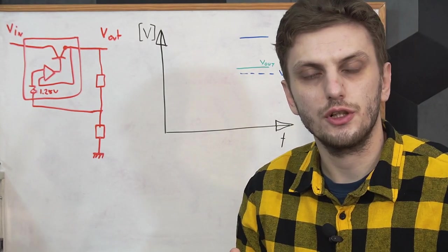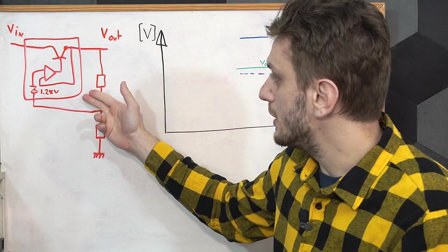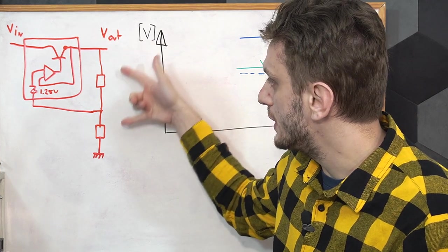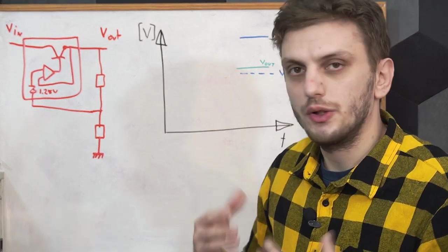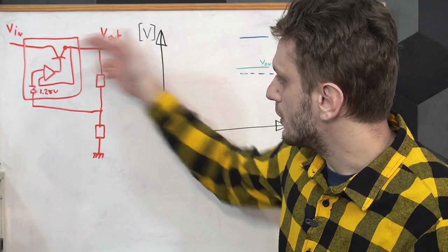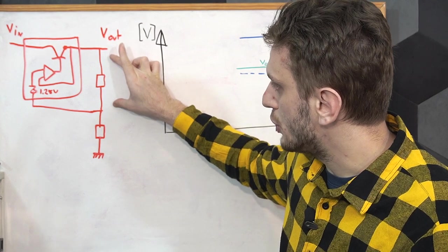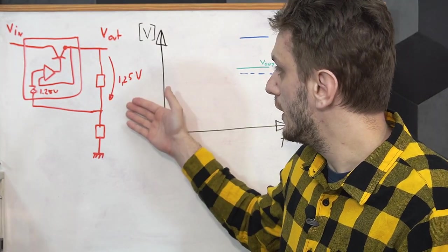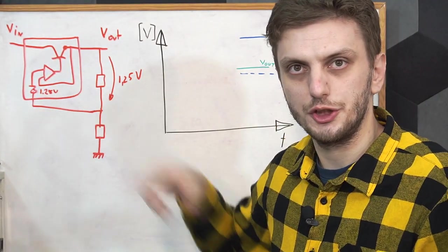So first off if we analyze the basic LM317 regulator, well we need a regulator, we got an input and output voltage, and then a voltage divider to set the output voltage. Now regarding voltages for correct operation on the circuit we will need a 1.25 volt drop on the upper resistor and then our 40 volt limit refers to the difference between input and output voltage.